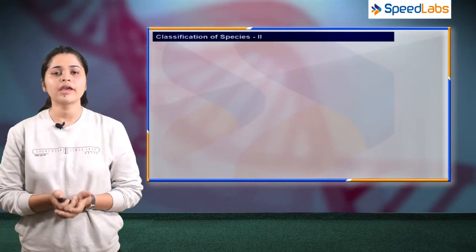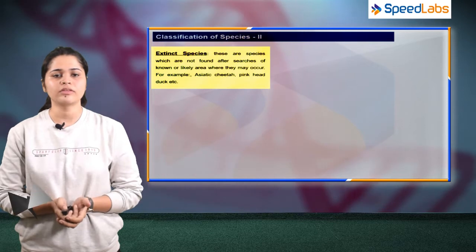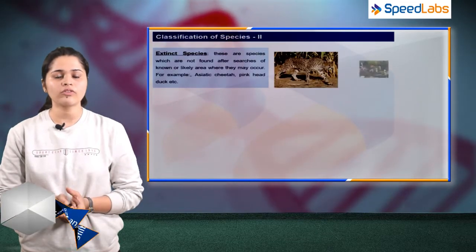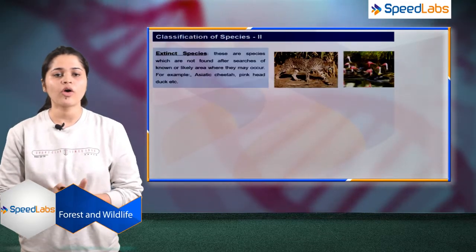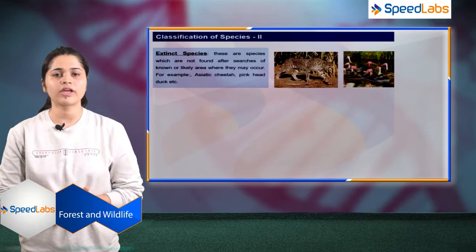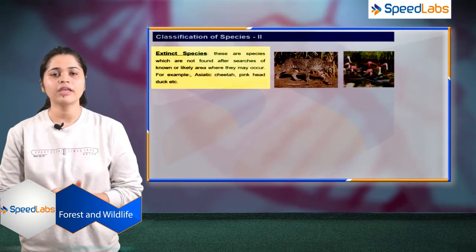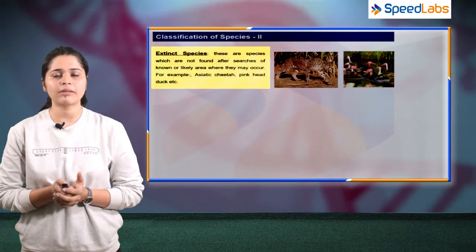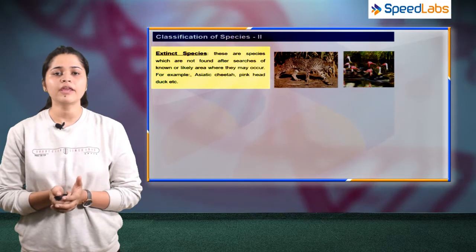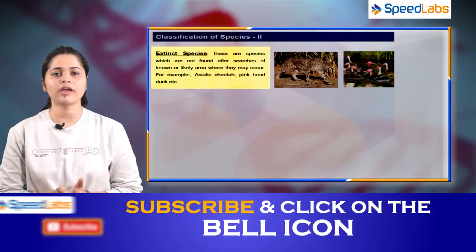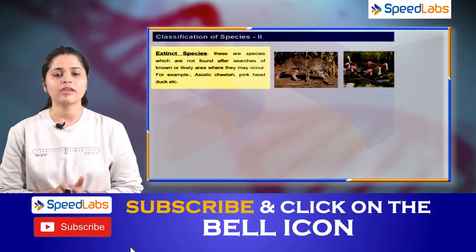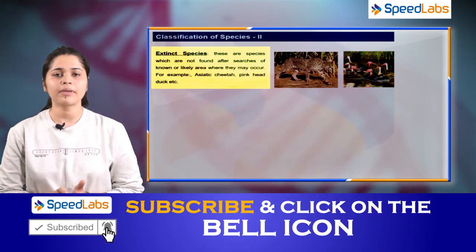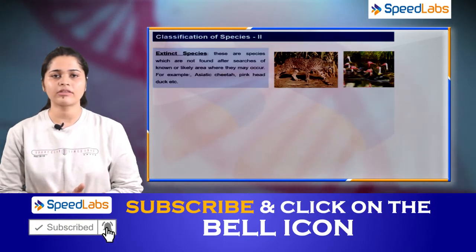The fifth type is extinct species. These are species which are not found after a search of known or likely areas where they may occur. Examples include the Asiatic cheetah and the pink-headed duck.